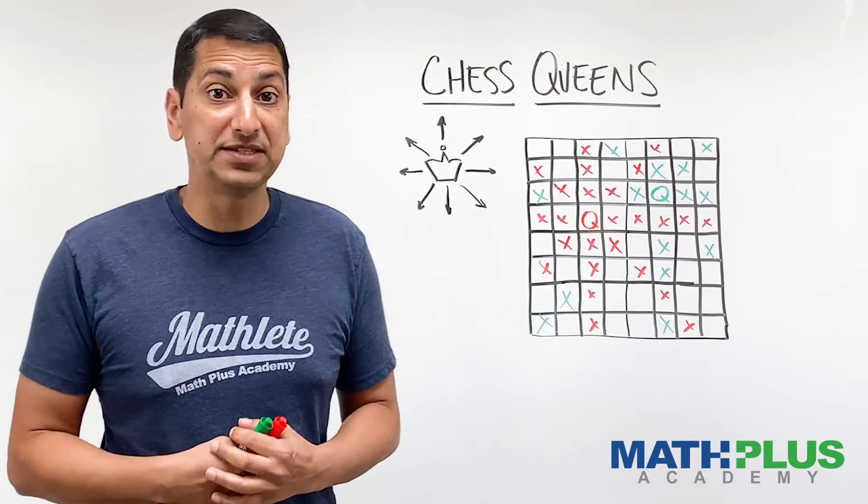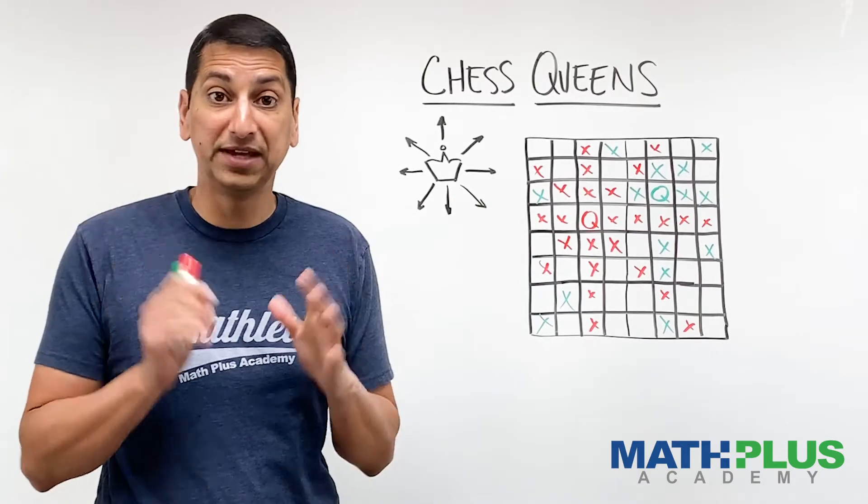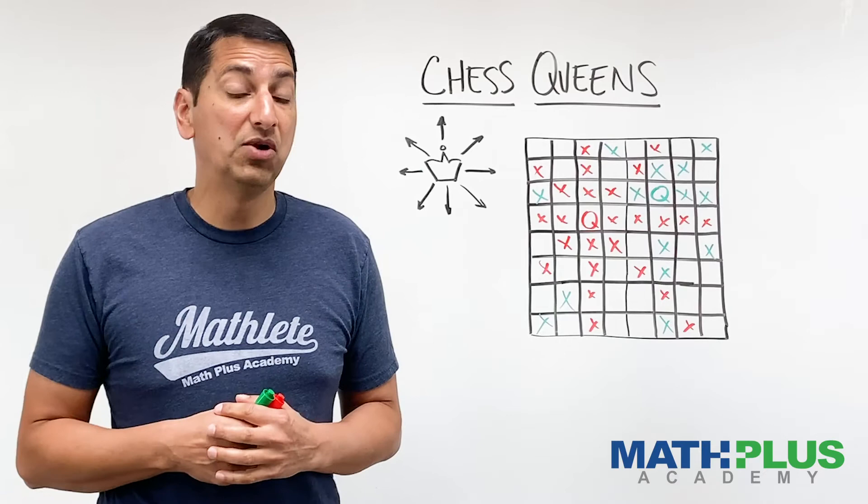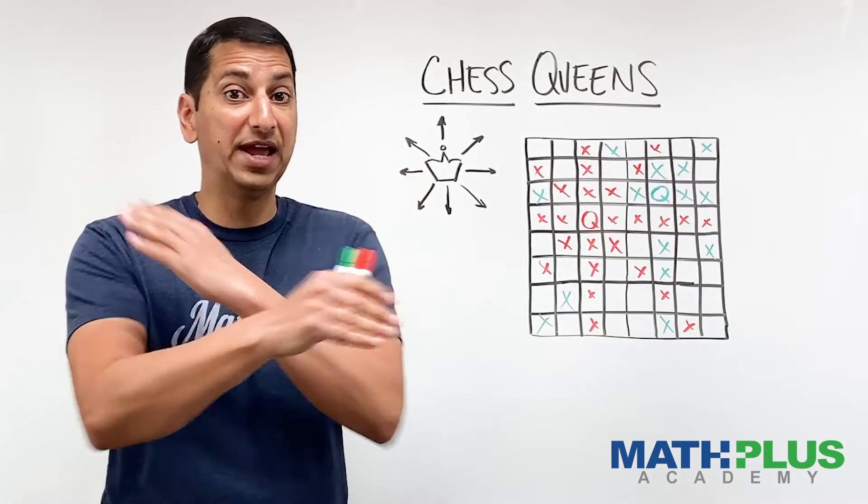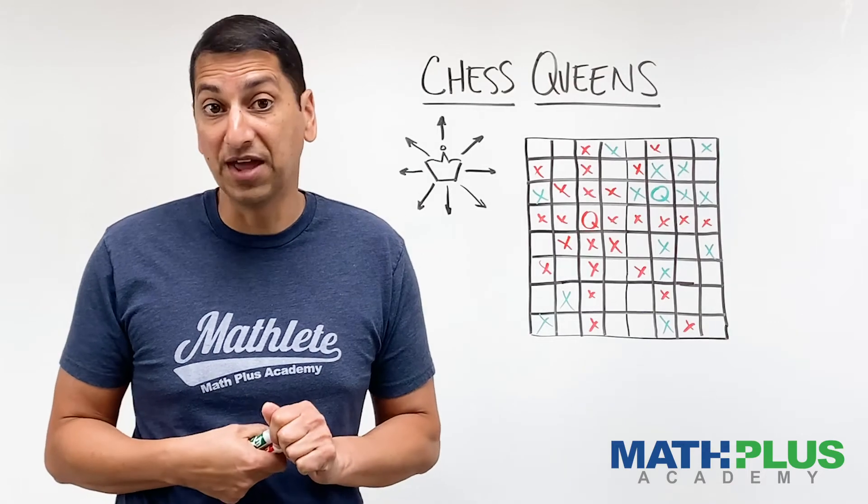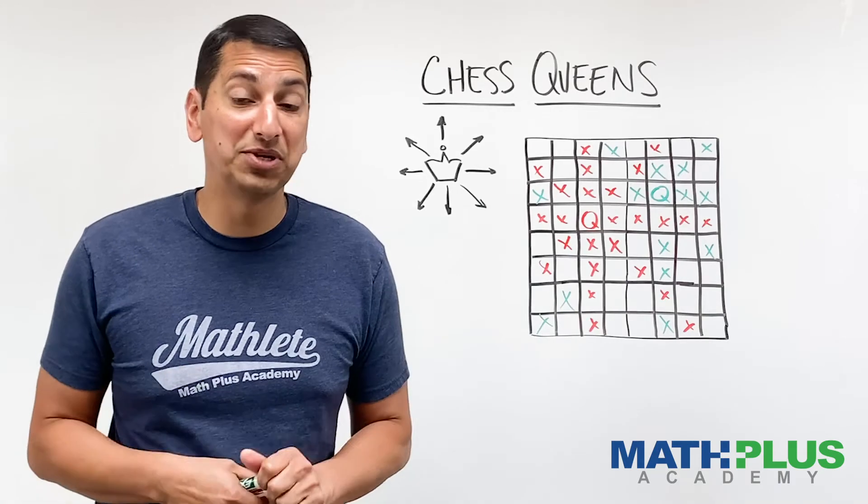You can also extend this to think about, well, what if I have rooks? Rooks can go up and down, left and right, but not diagonal. How many of those could you put on a chessboard so they don't attack each other? What about bishops? Bishops only go diagonal. They don't go up and down or left and right. So you can try this with the other pieces as well. The knight, which has the sort of funny way to move. How many knights can you put on a board?